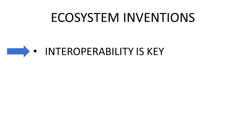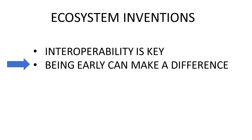So let's recap with ecosystem inventions: no single component operates in a vacuum — the systems have to work together. A cell phone regardless of brand has to work with the carrier's cell towers; video decoders have to work with video encoders and monitors. That's why in an ecosystem invention, being early can make a difference.